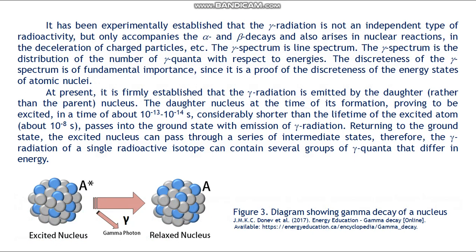The gamma spectrum is a line spectrum — the distribution of the number of gamma quanta with respect to energies. The discreteness of the gamma spectrum is of fundamental importance since it is a proof of the discreteness of energy states of atomic nuclei. At present it is firmly established that the gamma radiation is emitted by the daughter rather than the parent nucleus. The daughter nucleus at the time of its formation proves to be excited, for a time of about 10⁻¹³ to 10⁻¹⁴ seconds, considerably shorter than the lifetime of the excited atom, about 10⁻⁸ seconds.